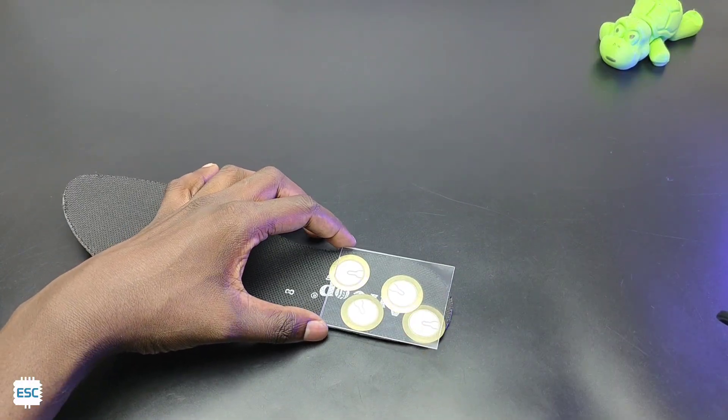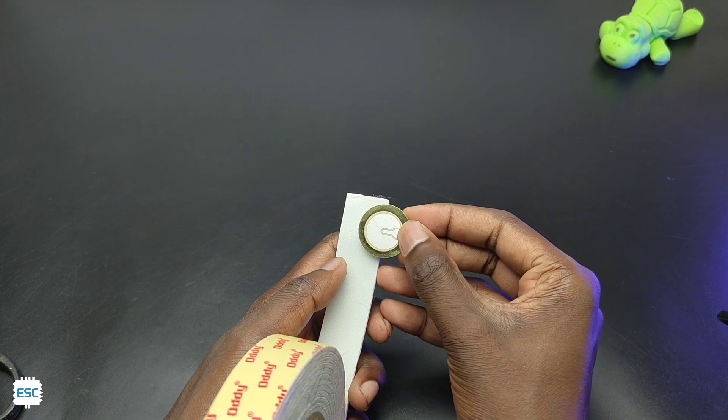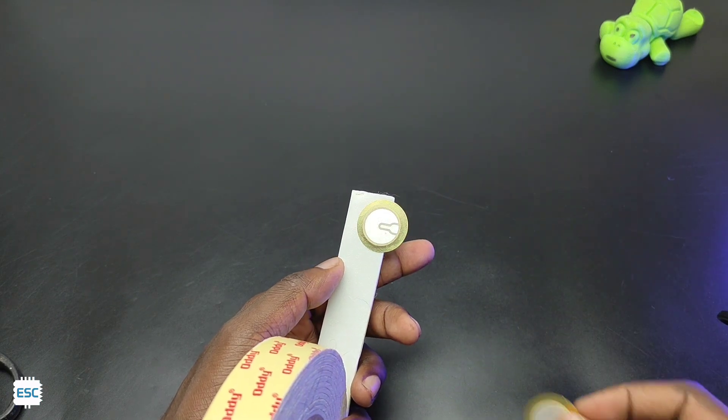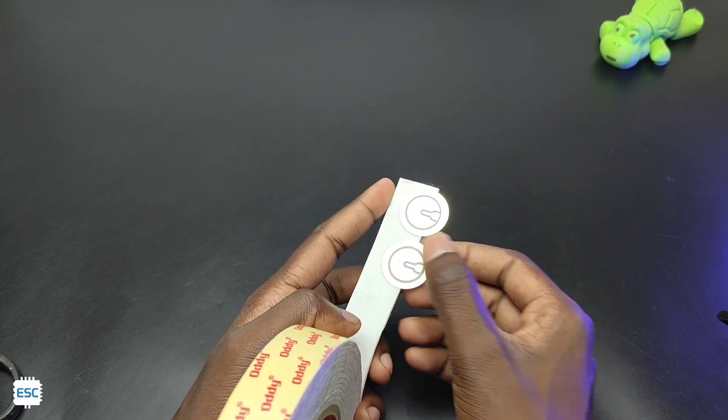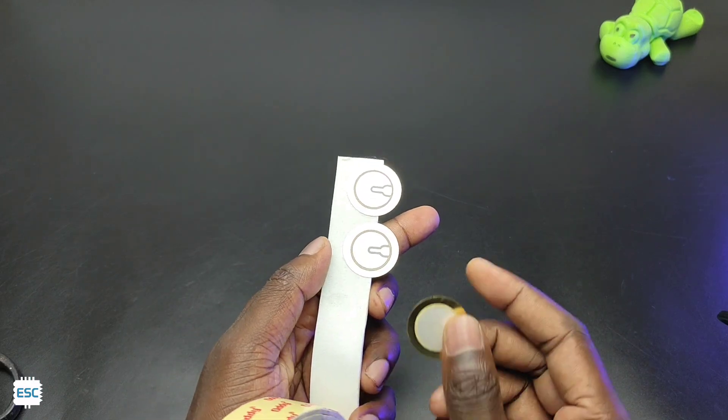We also need two acrylic pieces. First, I placed the piezo on the double sided tape and this will help to fix the piezo in an acrylic sheet and also act as a cushion.